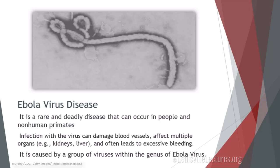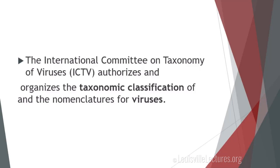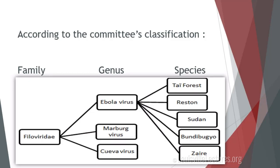So first, a little background. Ebola virus disease is a rare and deadly disease. It occurs in both people and non-human primates. The virus itself can damage blood vessels and also can affect organs. It often leads to excessive bleeding, and it's caused by a group of viruses within the genus Ebola virus. According to the International Committee on Taxonomy of Viruses, the Ebola virus is in the family Filoviridae. The genus is Ebola virus and includes the Marburg and Cueva viruses as well. The species of the Ebola virus are Tai Forest, Reston, Sudan, Bundibugyo, and Zaire.